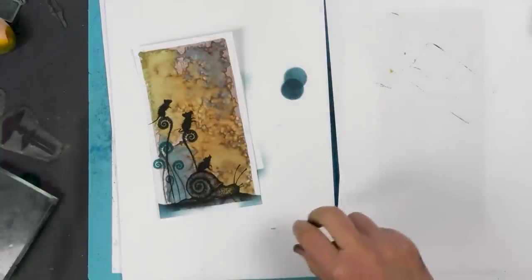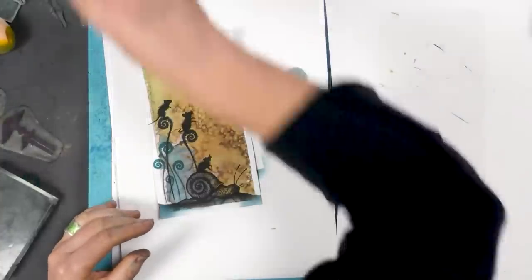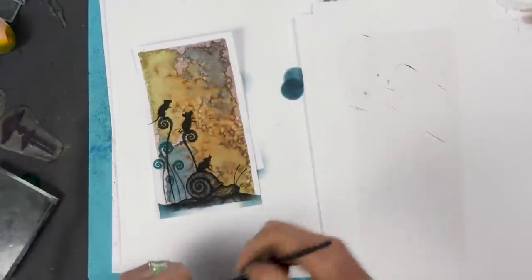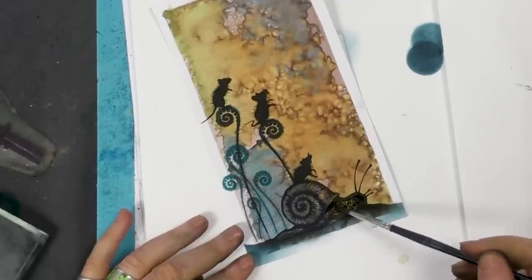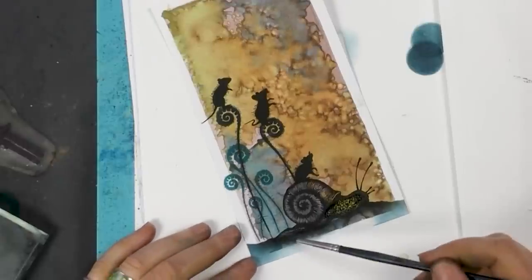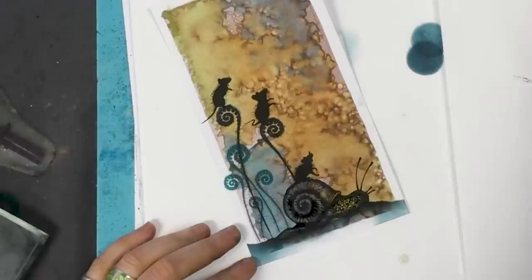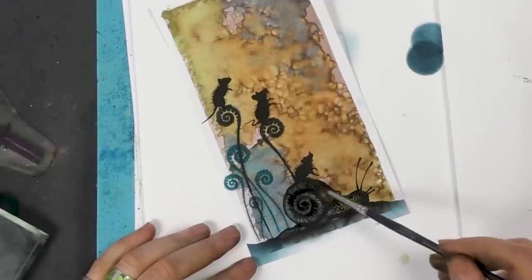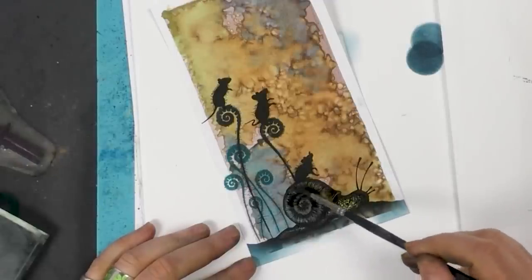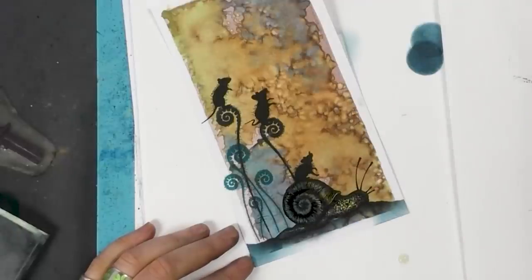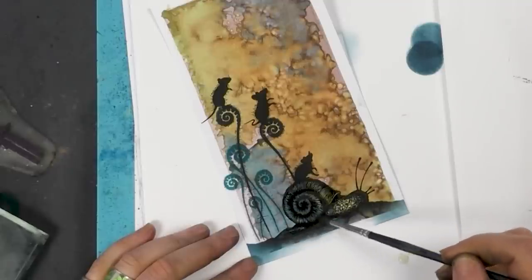So I want the snail to kind of stand out a little bit more, so I'm going to add some water to him. Just pop that over the top as we've done before. And that will just pull the colour out, not all the colour but just some of it. And it will be just enough to make the snail look a little bit more three dimensional.